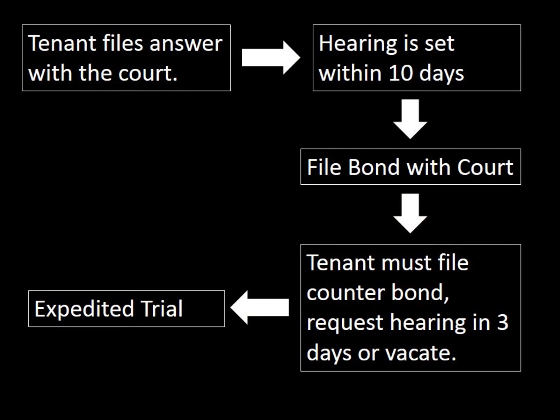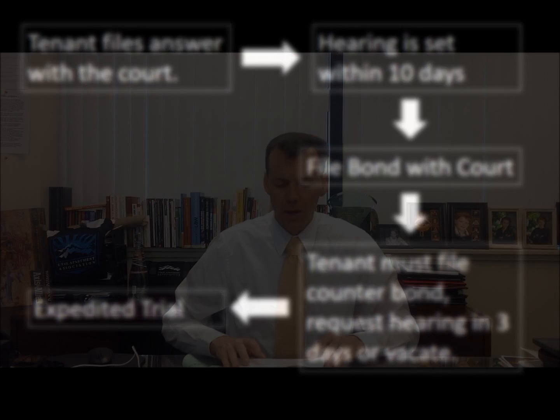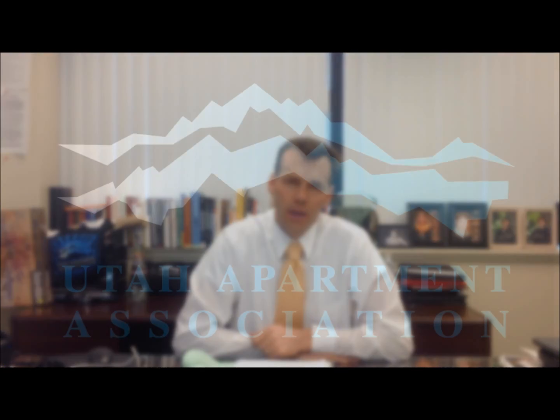In most cases we don't use a bond, but let's go back to the flowchart. In the old days, we used to file a bond to accelerate the process. There are some cases where you still might. What a bond is: you say, 'Your honor, we're going to put a bond down,' and the court usually sets it at three times rent. So you put $3,000 down, then the tenant has to match you — it's kind of like anteing up in a poker game. In order to stay in the property, they have to put the money down, which is pretty hard to do if they haven't paid rent. That's the Utah eviction process overview. We have separate videos on the hearing, serving notice, and the lockout. Hope you'll watch those if you have any questions and have a nice day.